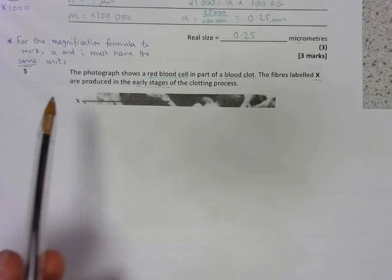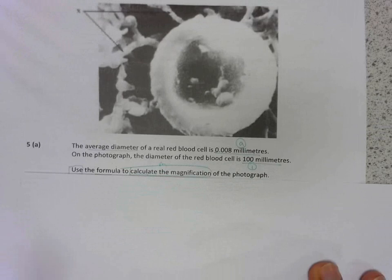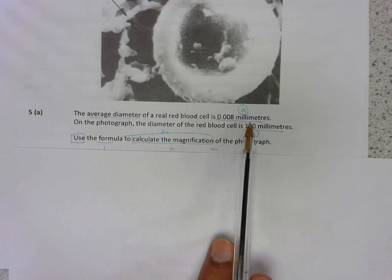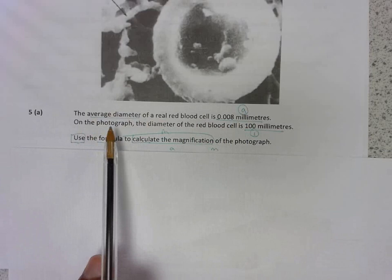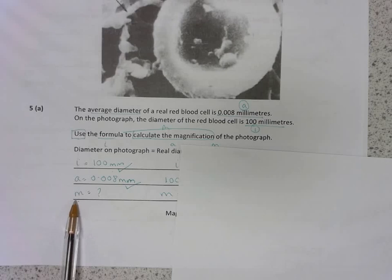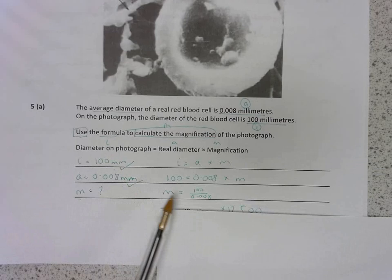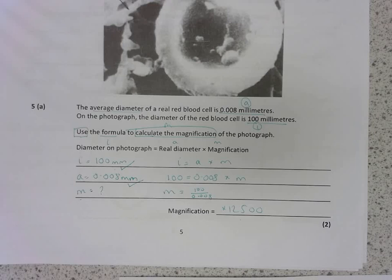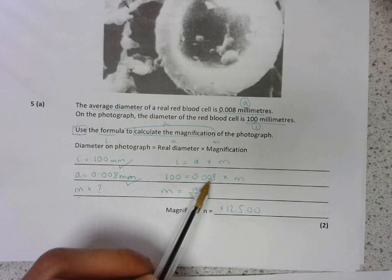The next question is about red blood cells in a blood clot. The fibers labelled X are produced in the early stages of clotting. The average diameter of a red blood cell is 0.008 millimeters. So that's a real blood cell, so therefore I've put the actual size. And on the photograph, that's the image size. So I've labelled 100 millimeters as the image size. I've asked to calculate the magnification, so I've boxed that and put an M there. So again, substitute. And I know my units are the same, so I don't have to convert. And so I substitute the numbers in and I get 12,500 as my final answer. Remember to rearrange. In this case, I'll be dividing both sides by 0.08 to get M on its own.